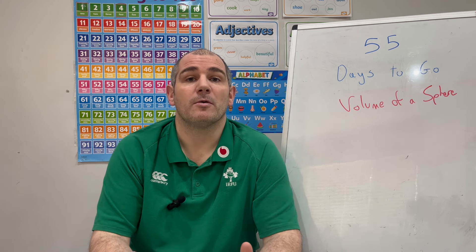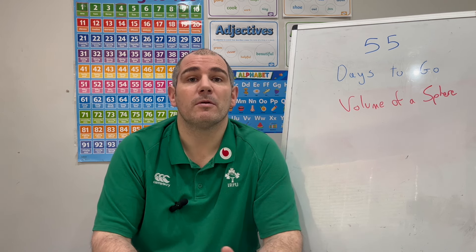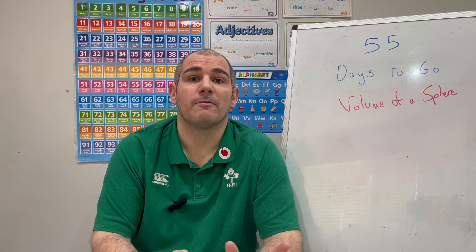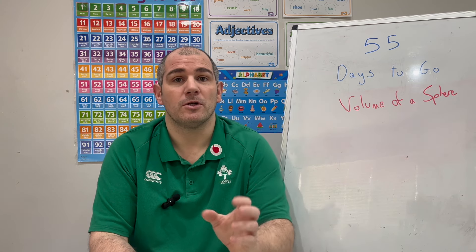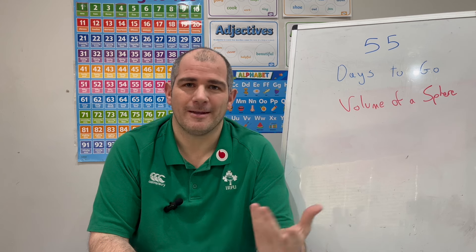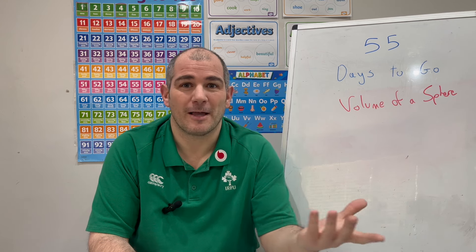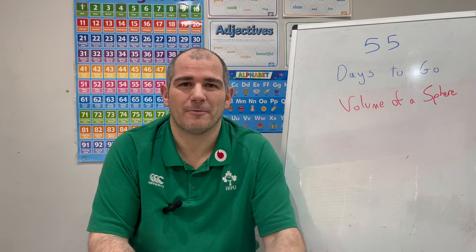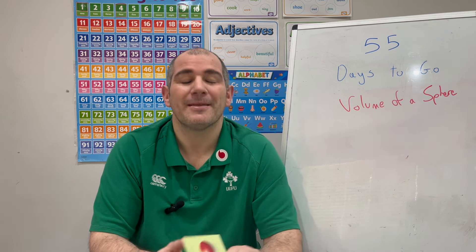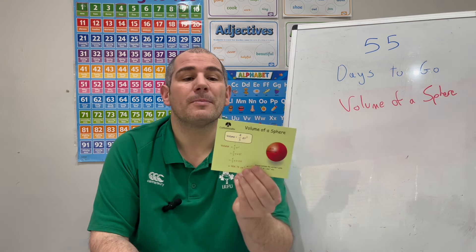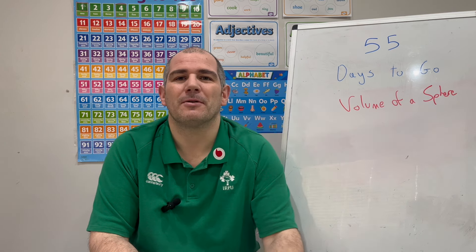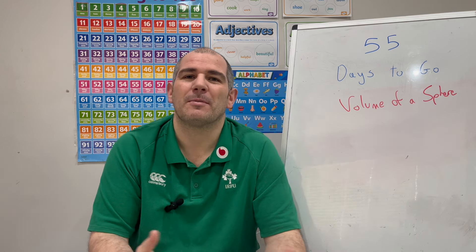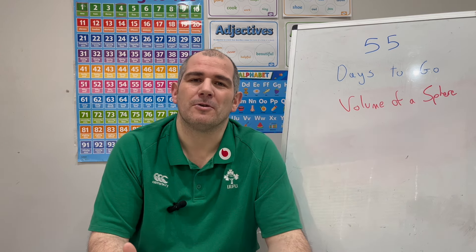We're going to look at how to find the volume of a sphere. The volume of a sphere is found using 4/3 π r³, and that formula is given to you so you don't need to learn it off by heart, though you might just remember it. If you get the Cope Maths Revision card, card number 90 is the one on the volume of a sphere.